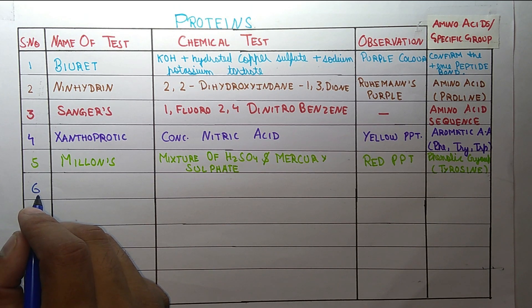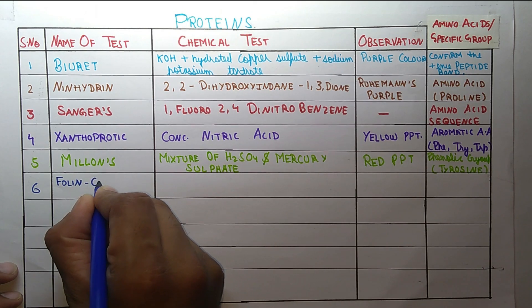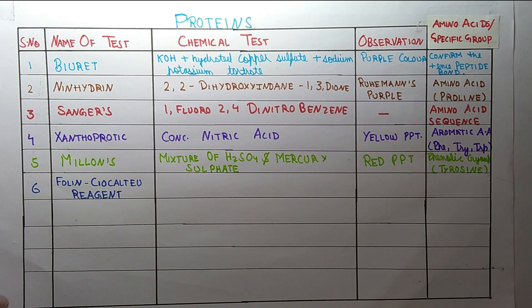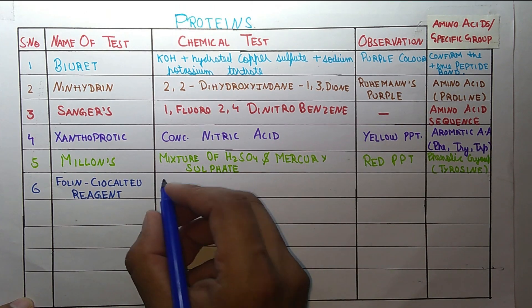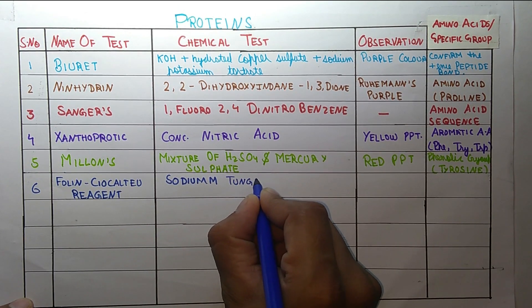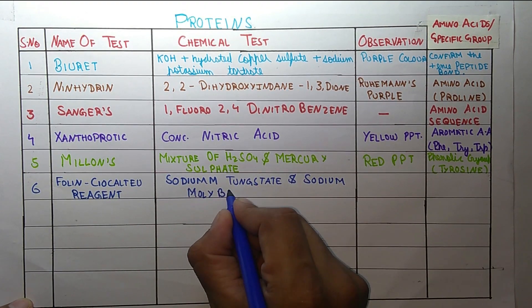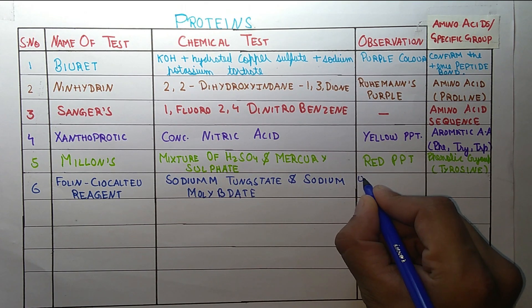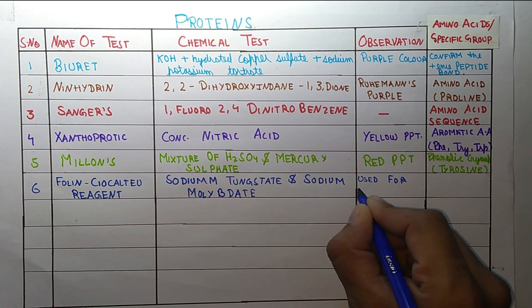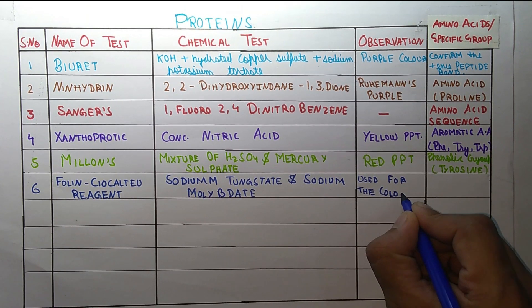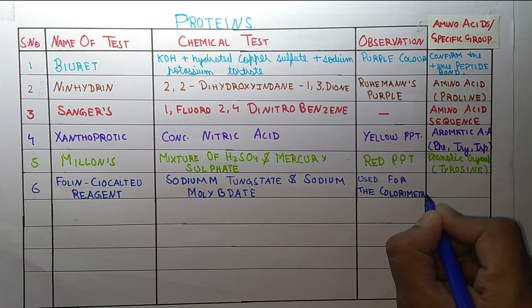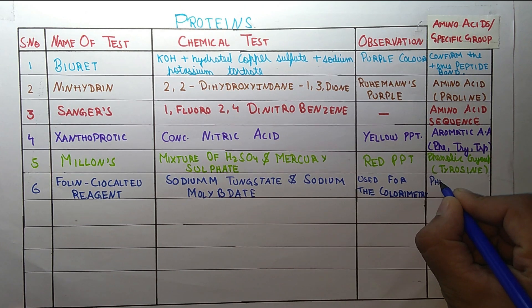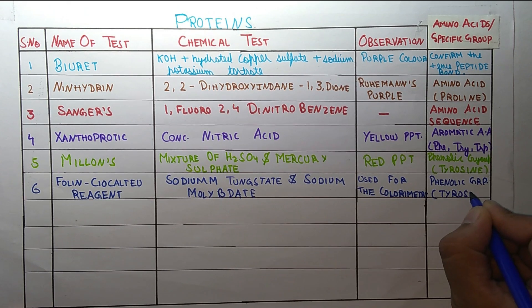The next test is the Folin-Ciocalteu reagent test. The chemicals used are sodium tungstate and sodium molybdate. It is used for colorimetric assay, and it confirms the presence of the phenolic group that is present in tyrosine.